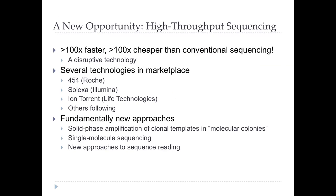Three, four, maybe five years ago, a new opportunity arose in our discipline — the advent of high-throughput sequencing. This was a really disruptive technology that changed the landscape. It meant we could do things 100 times faster, 100 times cheaper than conventional sequencing. There has been continual progress since the introduction of these technologies — kind of like permanent revolution — and Moore's law has kicked in in a big way. We're seeing performance double probably every year in terms of output and throughput, and the costs are plummeting as well.